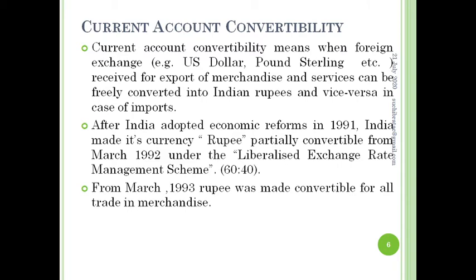Under that system, it was a 60-40 arrangement: 60% of the foreign exchange was allowed to convert into rupee at the market-determined rate, whereas the remaining 40% had to be surrendered to the Reserve Bank of India and exchanged at the officially fixed exchange rate — making it only partially convertible. India adopted this step because, at that time, the state of the economy meant the country was not confident to allow 100% convertibility in the current account, as India had a very large deficit balance of payments.